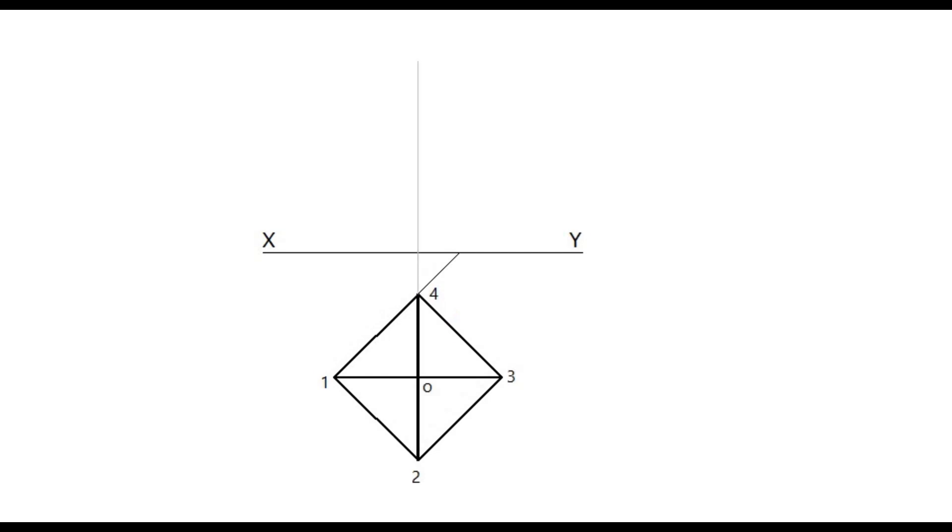Project the apex point and maintain the height of the pyramid in the elevation. Project the base corners up to the XY line. Join these points from the XY line to the apex point. These are the slant edges in the elevation. Name the points in the elevation. Now the projection part is over.